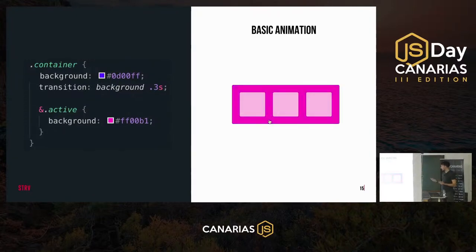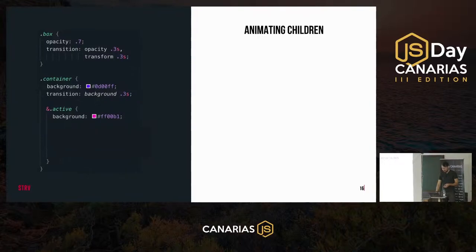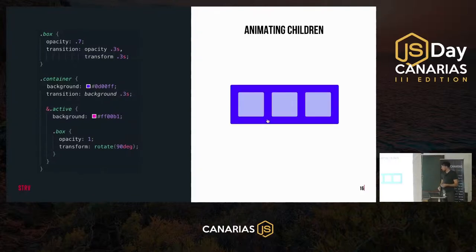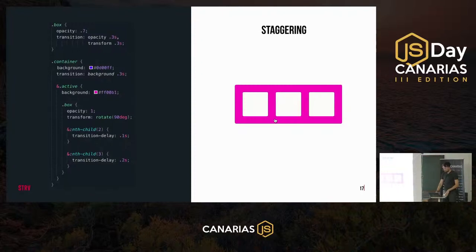We can make things more interesting and propagate animation down to children. We define the same transition property for the box elements — those three boxes inside the container — and when a box is inside the active container, we change its opacity and rotate it 90 degrees. We can make this even more interesting by adding staggering animation, using pseudo-class selectors like nth-child to add a transition-delay property to the second and third boxes.